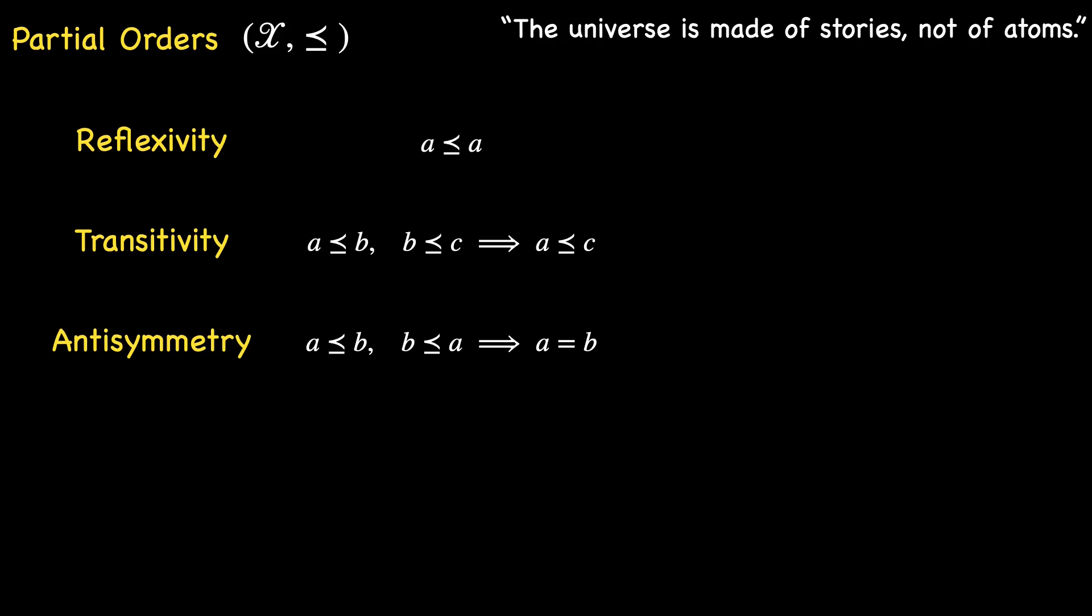Extending from this, a total order is a partial order that exhibits strong connectivity, signifying that A relates to B or B to A or both.